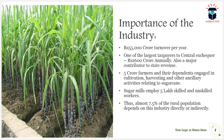Currently, five crore farmers and their dependents, including agricultural laborers, are dependent upon sugarcane cultivation, harvesting, and related activities. Five crore is not a small number, and if we include dependents and agricultural laborers, this number may reach 10 to 15 crore. Five lakh skilled and unskilled workers are employed in sugar mills, and approximately 7.5% of India's rural population depends on this industry either directly or indirectly.